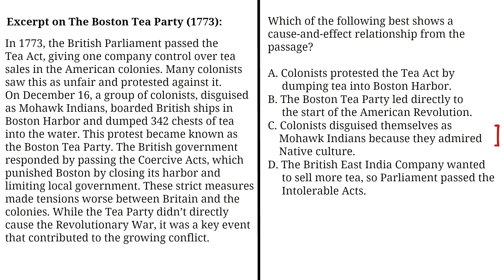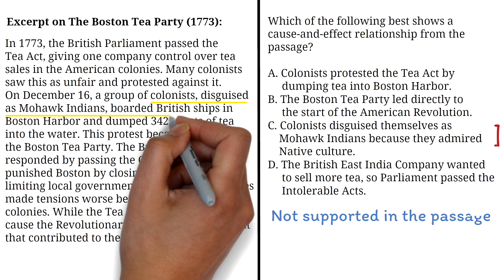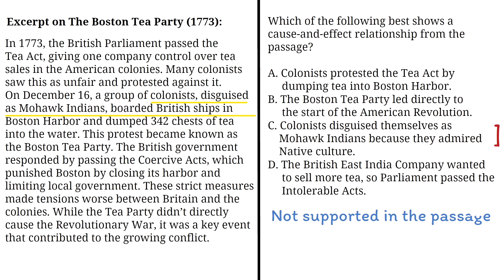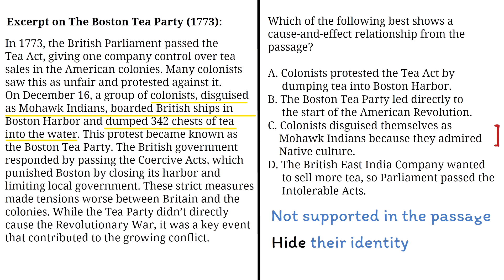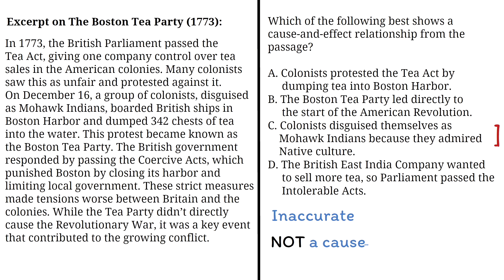Option C says: Colonists disguised themselves as Mohawk Indians because they admired Native culture. That's incorrect. This is not supported by the passage at all. There's no evidence in the text that admiration for Native culture was the reason for the disguise. The passage tells us that the colonists disguised themselves as Mohawk Indians and boarded the British ships to hide their identity and carry out their plan — dumping the chests of tea into the water. So the statement in Option C does not show a valid cause-and-effect.